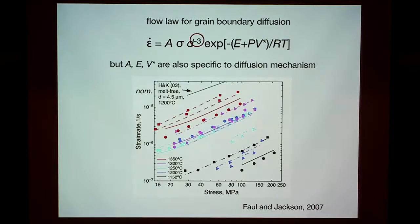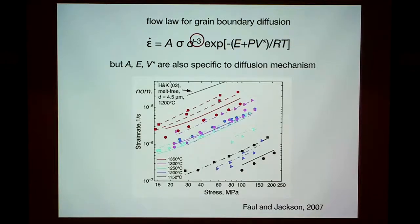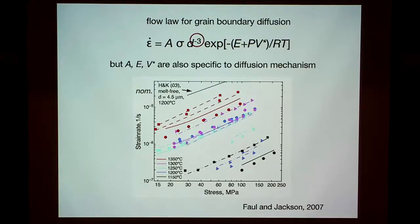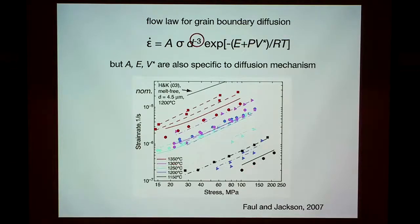Here's an example of deformation experiments as a function of temperature. The colors correspond to temperatures from 1150 to 1350°C. One critical thing is getting a good constraint on the activation energy, so there's interest in doing deformation experiments over a broad temperature range. At 1150°C, strain rates are very low — you have to sit around for quite a while, basically overnight for just one data point at constant strain rate.